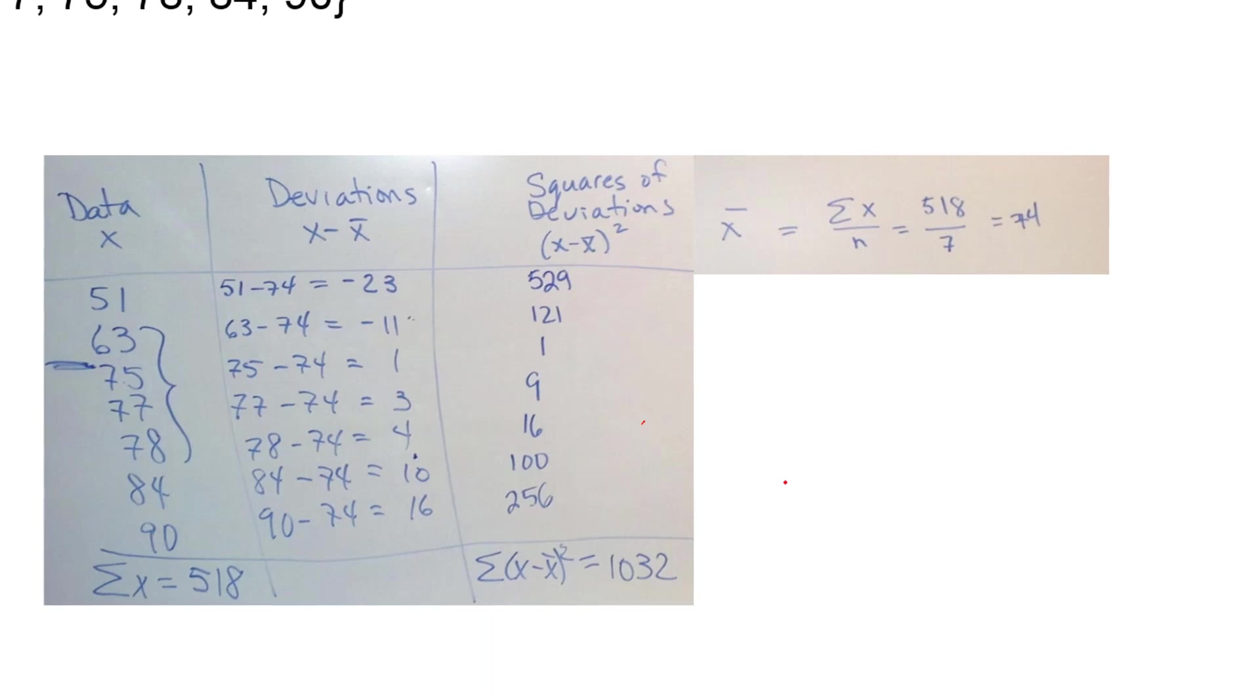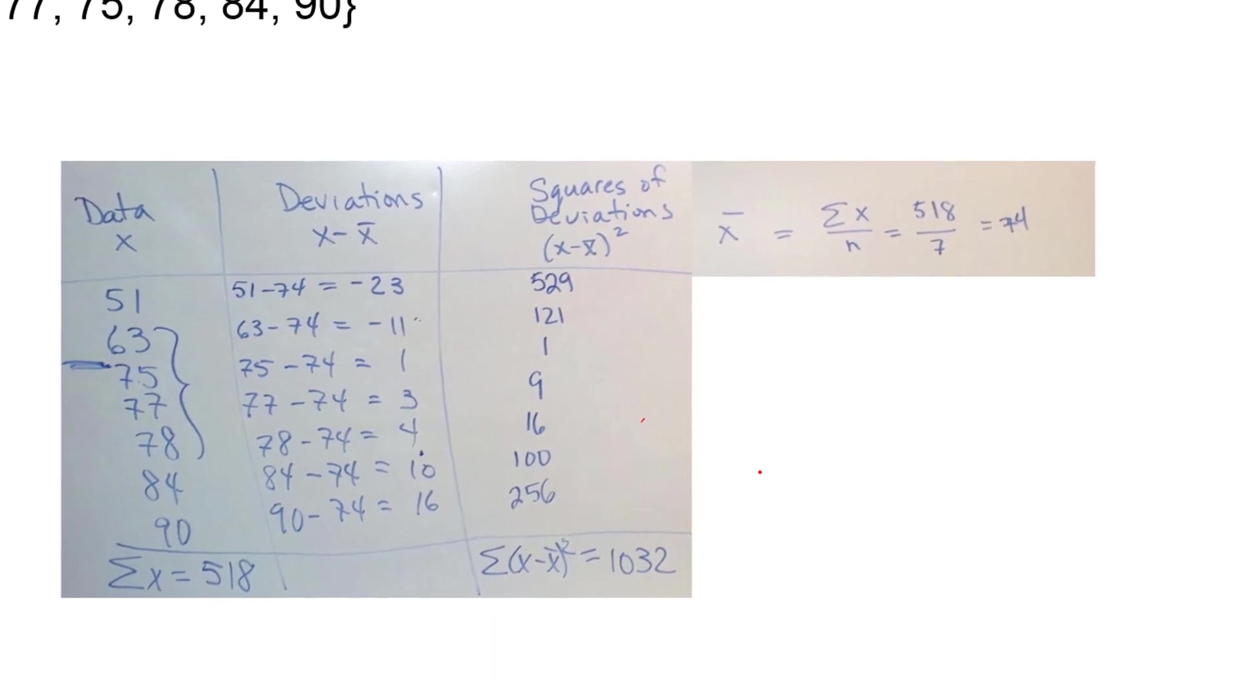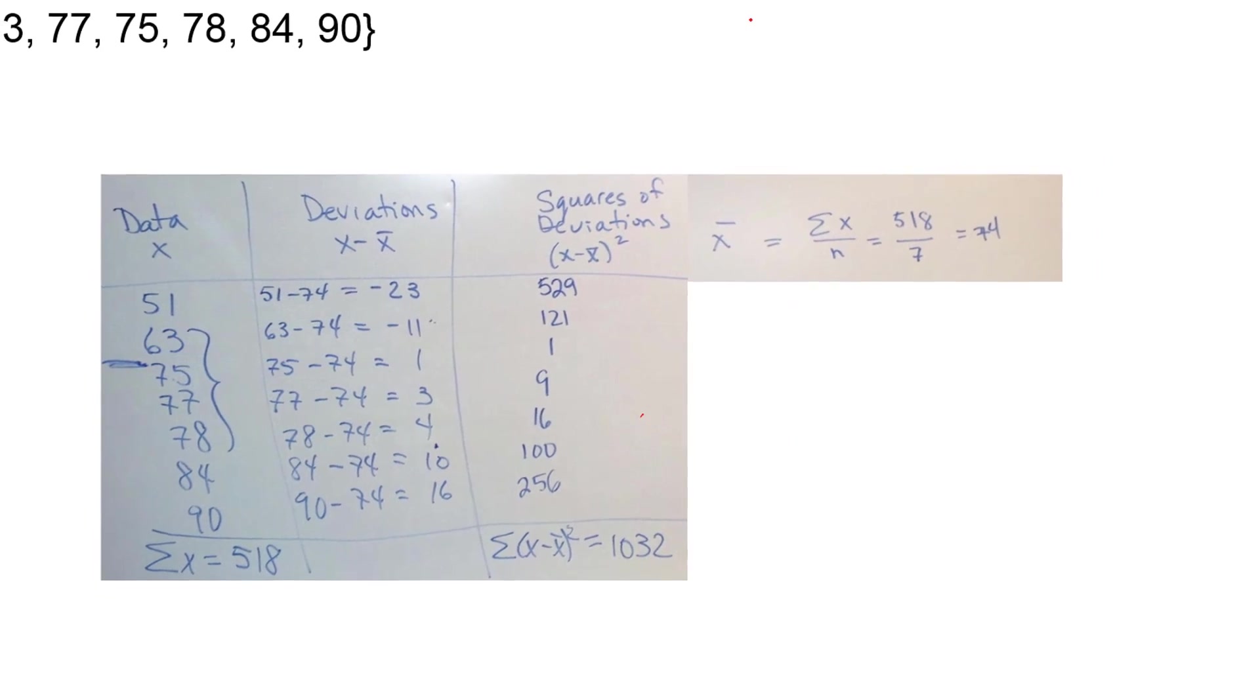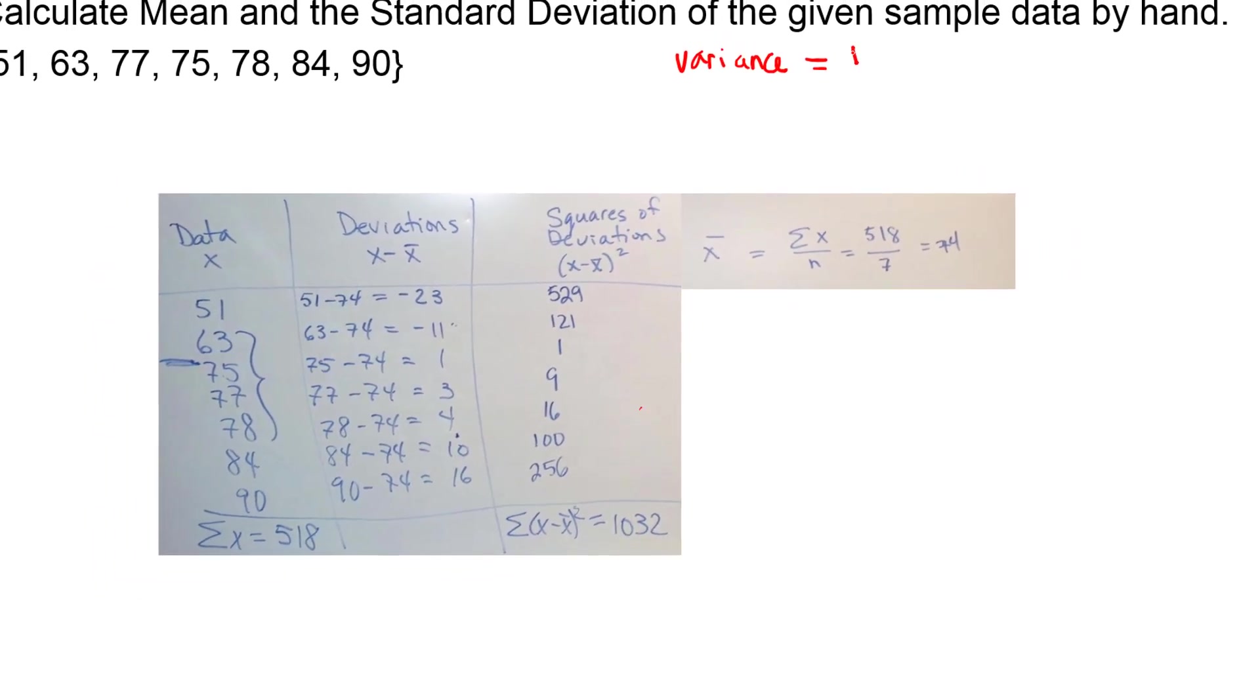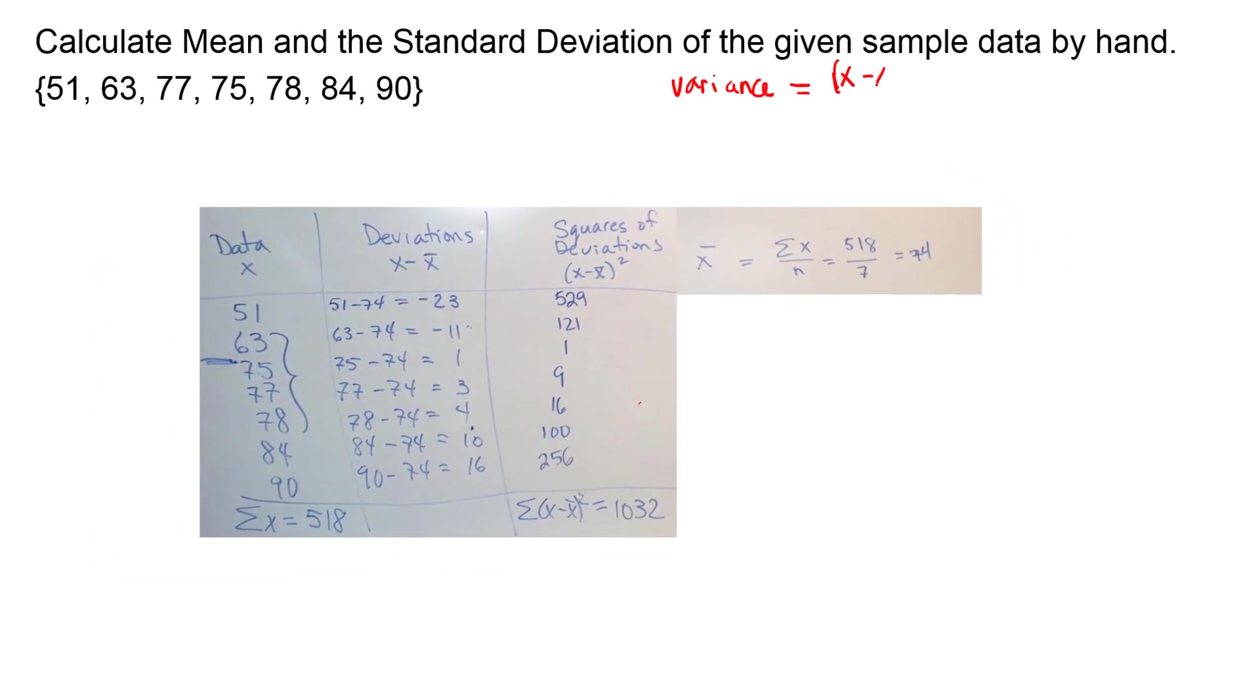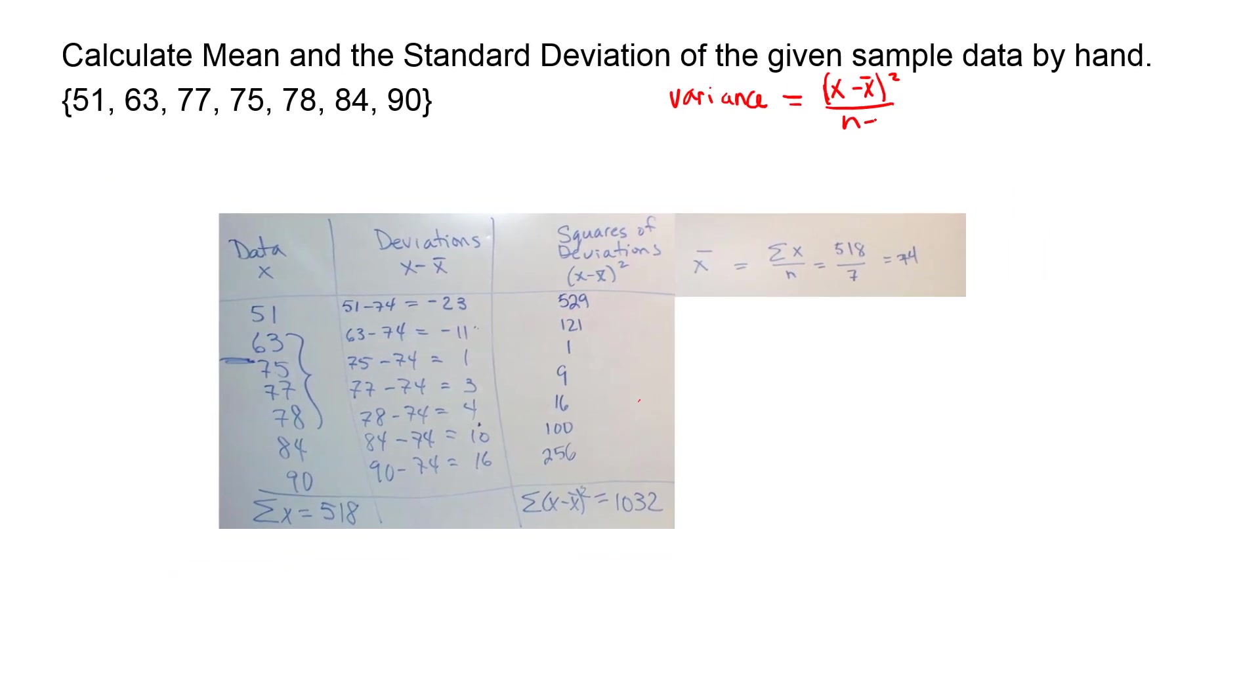Now remember we had two formulas. We have the variance X minus X bar squared over n minus 1 which is S squared, a symbol for that because it's the standard deviation squared. The standard deviation is what? The square root of all of that. What you just, oh I forgot my summation. What you just found is the sum of all the squares with that number 1032.